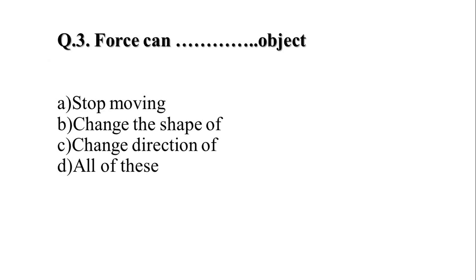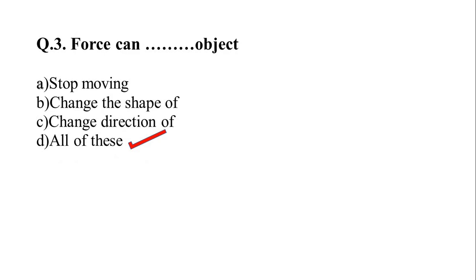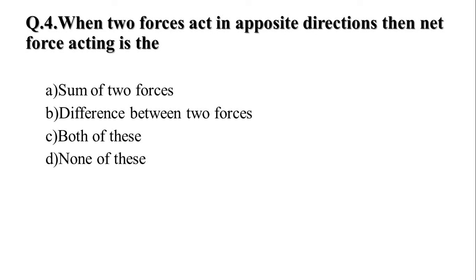Question 3: Force can — option A: stop a moving object, option B: change the shape of an object, option C: change the direction of an object, option D: all of these. The correct answer is option D, all of these. Question 4: When two forces act in opposite directions, the net force acting is — option A: sum of two forces, option B: difference between two forces, option C: both of these, option D: none of these. The correct answer is option B, difference between two forces.